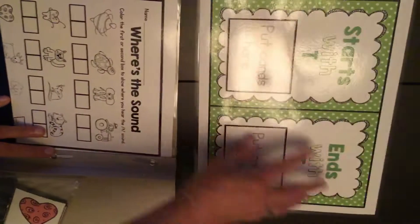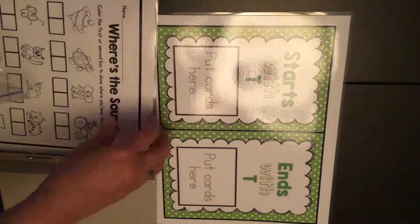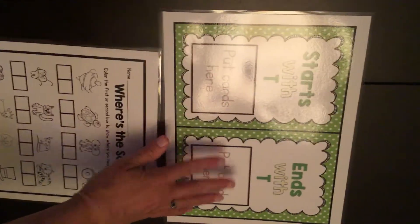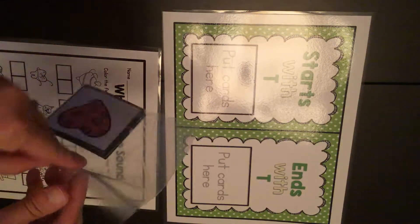I'm going to open it up. Here's my sorting mat. I'll lay it out. Here are my cards. Here's my paper. Set this off to the side. Open the bag.